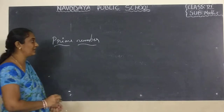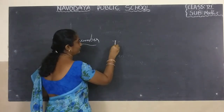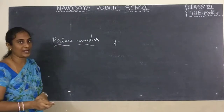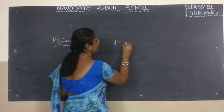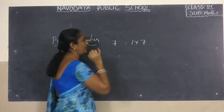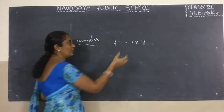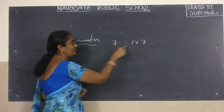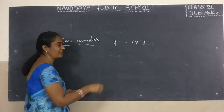For example, if you take 7 — 7 is a prime number. Why? Because we only have 1 into 7. In any other table, are you getting 7? No. That's why it has only two factors: one and itself. So only 7 we are getting.